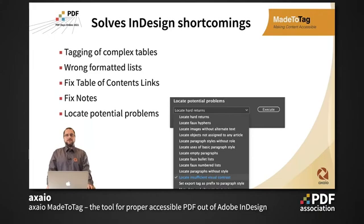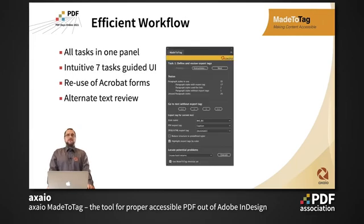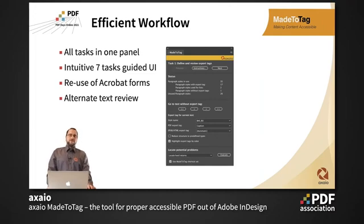For example, if you're using hard returns where you don't actually want a return at all. For the efficient workflow, InDesign itself has different aspects of accessibility spread across the application — you have to be aware of the articles panel, paragraph styles with export tags, and so on. Me2Tag brings all of that into one panel, putting those aspects into one UI.